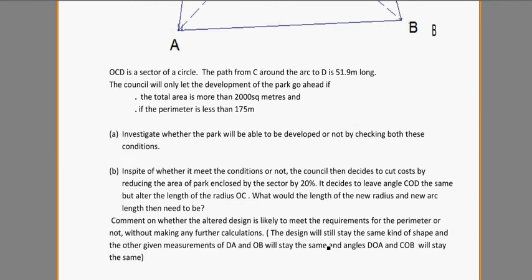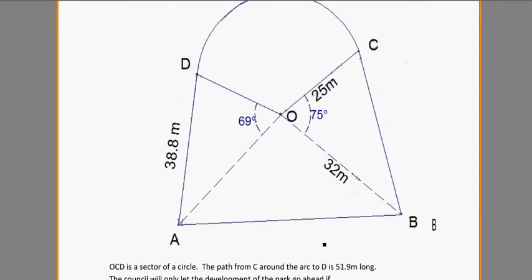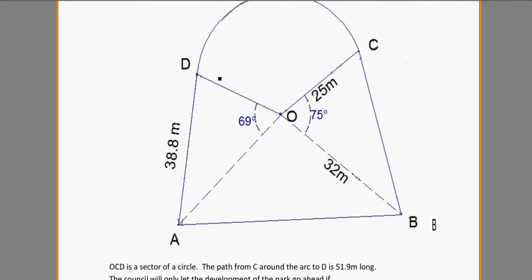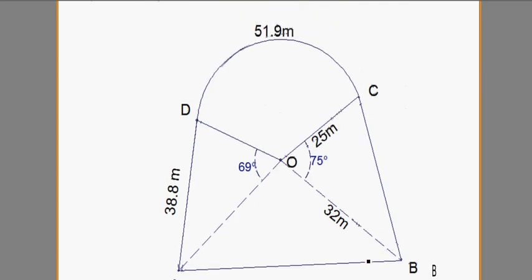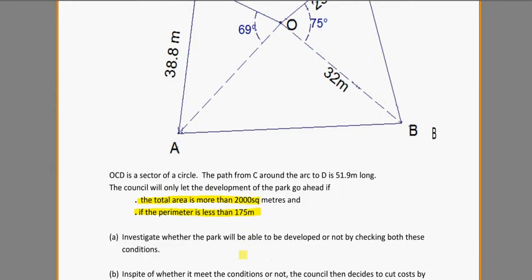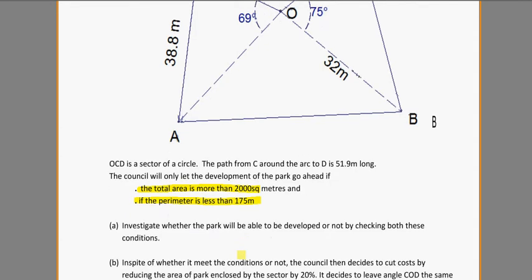Taking a look at the words: OCD is a sector of a circle — it's the top part of the circle, OCD. The path from C to D, from C around the arc to D, is 59 meters long. So we know that that's the arc length up there. We'll label that as equal to arc length. The council will only let the development of the park go ahead if the total area is more than 2,000 square meters and if the perimeter is less than 175 meters. Some numbers that I might need.